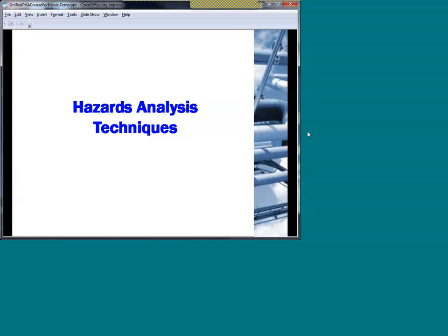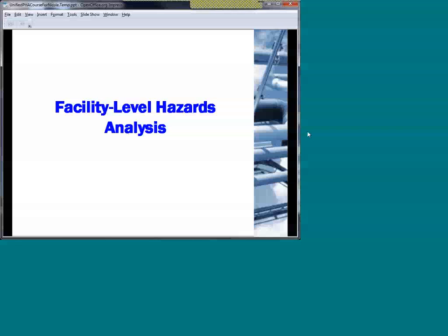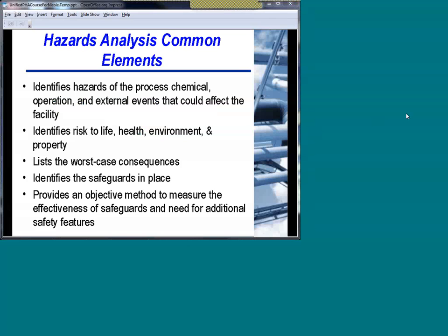So we've looked at the basic requirements in SEMS, where they come from, and a lot of the nuances controlling both your facility-level hazards analysis and the JSA. Now let's talk a little more about the techniques, starting with the facility-level hazards analysis. Common elements for all techniques include: identifying hazards; looking at potential risk to life, health, environment, and property; understanding and documenting consequences; identifying safeguards in place as barriers between your initiating event and consequences; and providing an objective method to measure the effectiveness of safeguards and identify the need for additional features in the form of recommended actions.